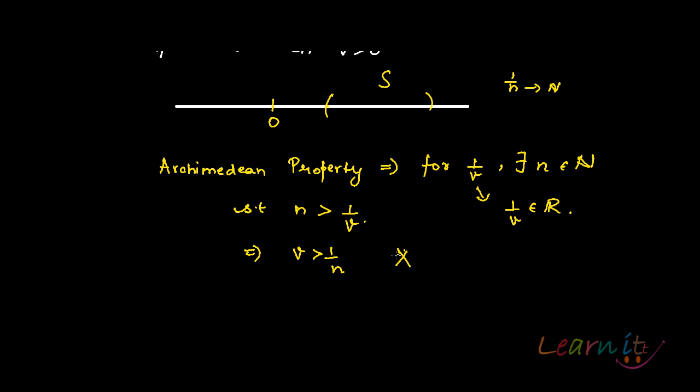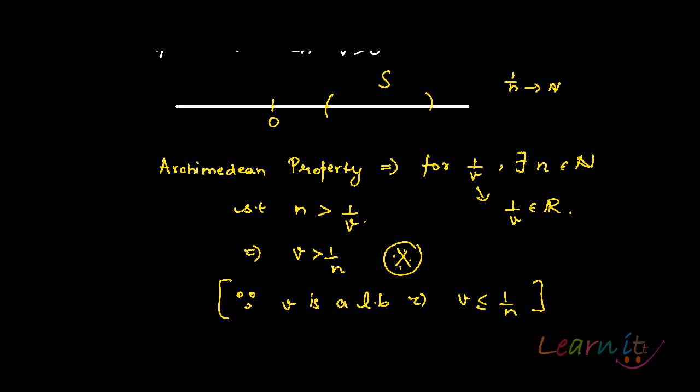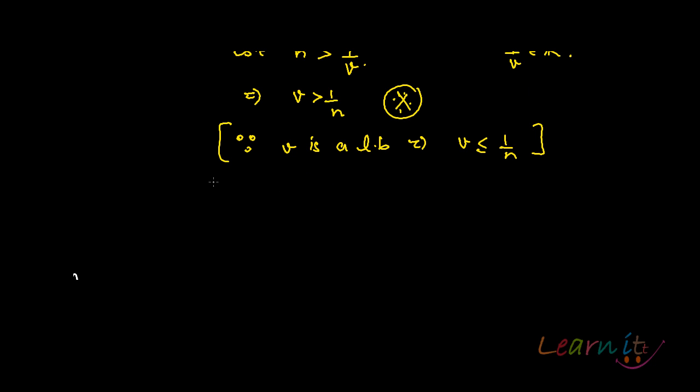Which is a contradiction. Why? Because v is a lower bound. So which implies that v is less than or equal to 1/n for every 1/n of the set. So our assumption is wrong. Therefore our assumption is wrong.